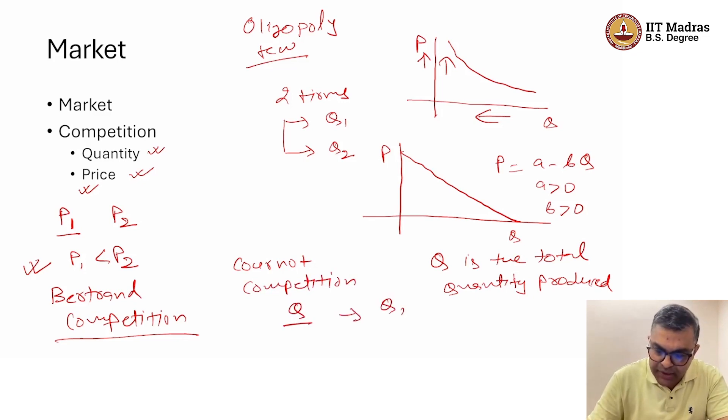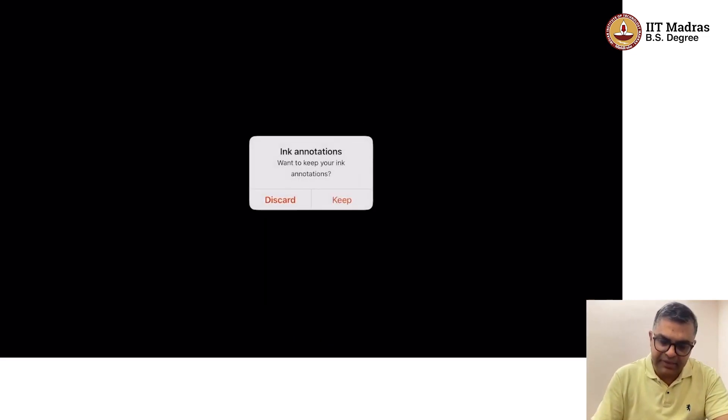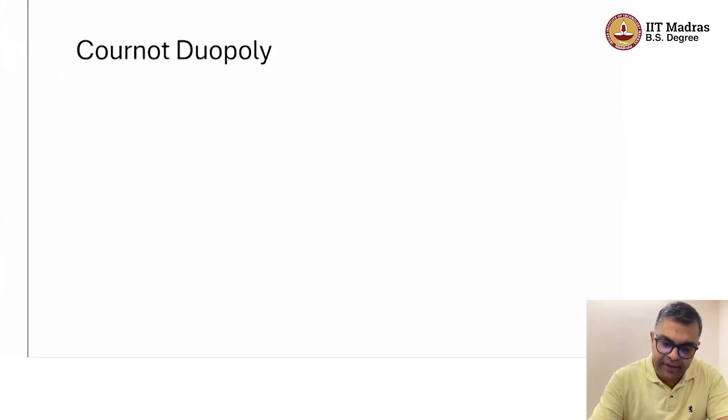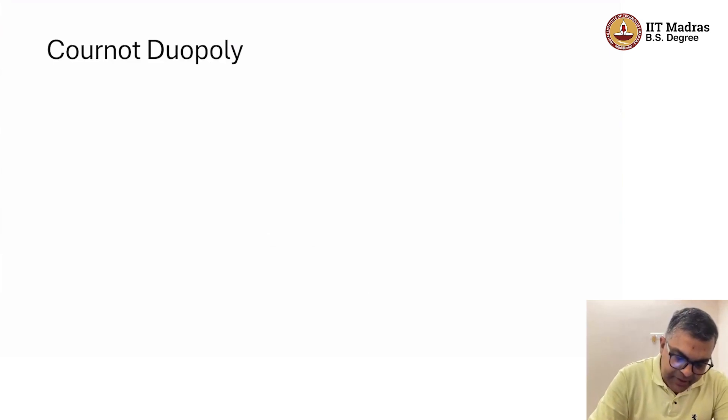We are not talking about Bertrand Competition. We are talking about Cournot Competition, which takes place along the quantity dimension. Firm 1 produces Q1 and firm 2 produces Q2. Together, the output is Q1 plus Q2. The price of each item gets decided in the market, which is A minus B times Q1 plus Q2. We can think of the game in a different way. The game is very simple: there are two firms, firm 1 and firm 2.